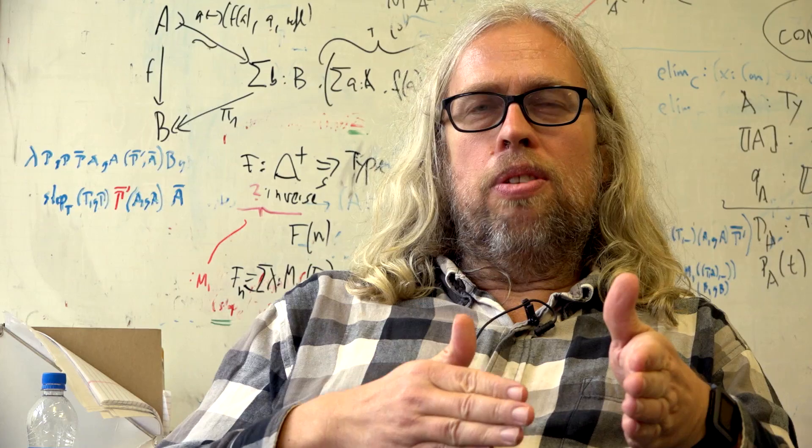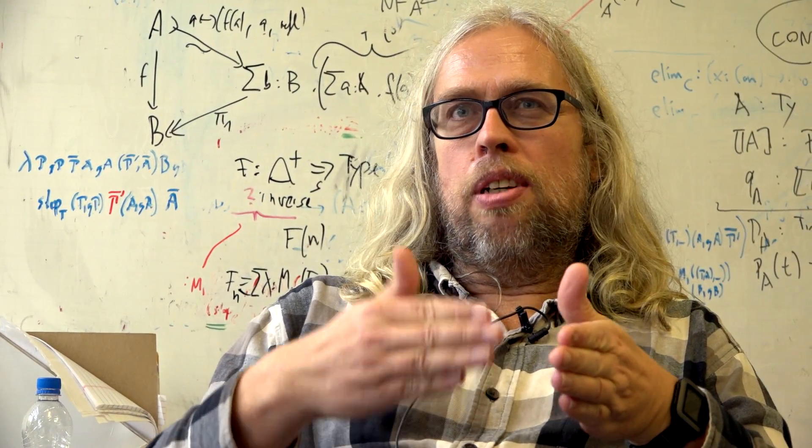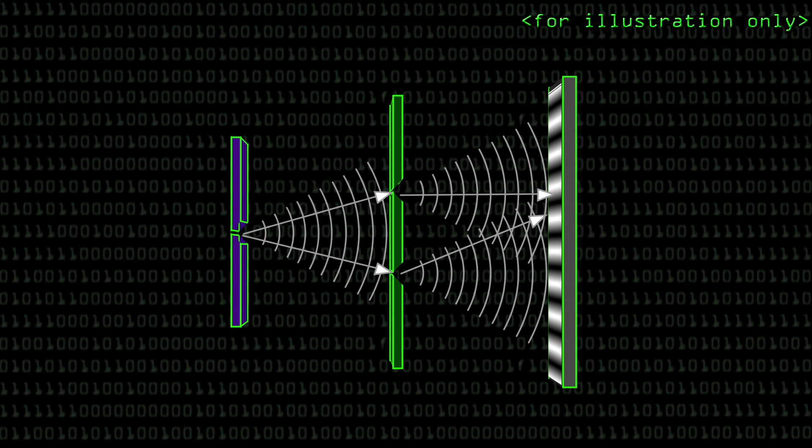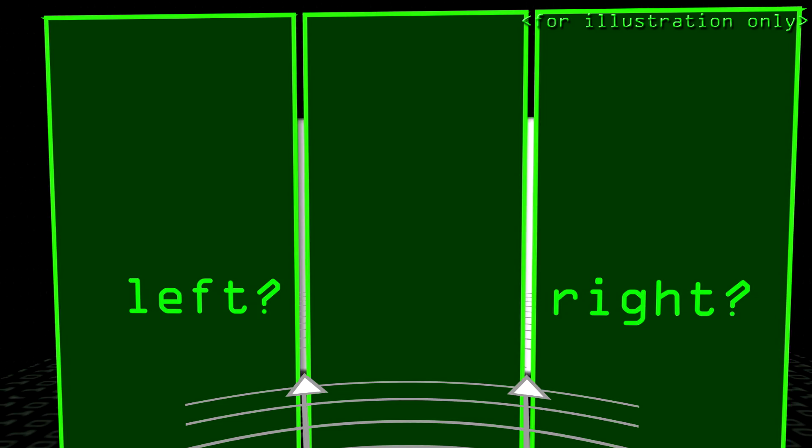But at the same time, we know that they're actually particles, because we never have half a photon, we never have half an electron. So the question is, if each time we send only one electron through these slits, which way does it go? Does it go left or right?